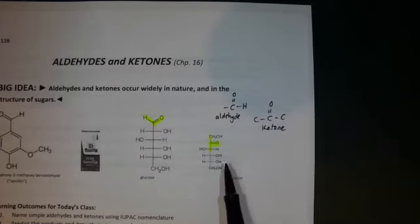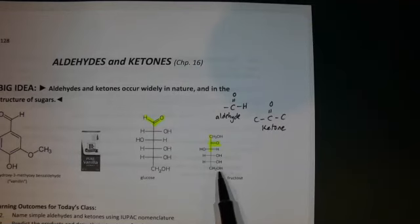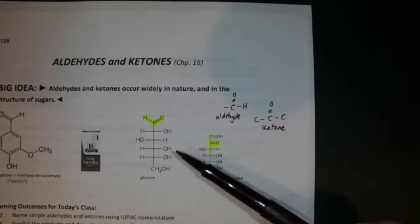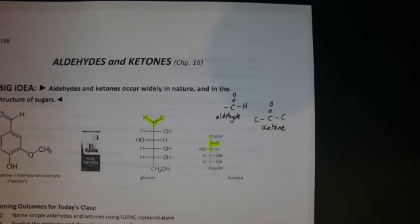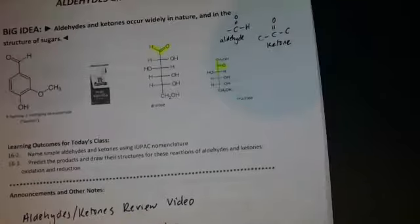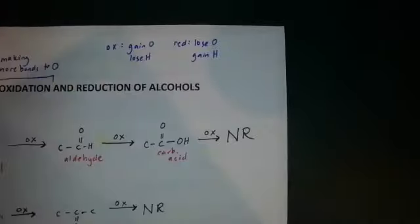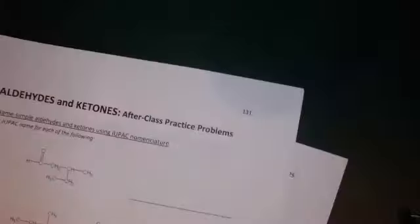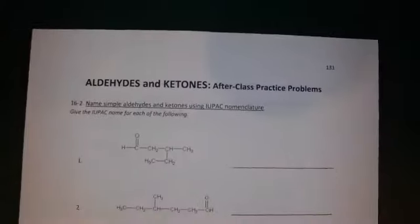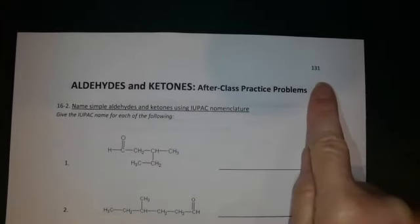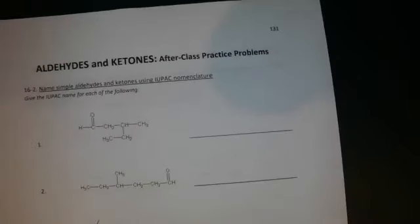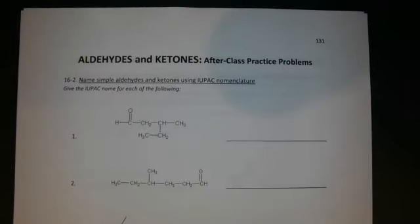Fructose has a ketone plus a bunch of alcohol groups; glucose has an aldehyde plus alcohol groups. Now let's start with naming — join me on page 131, which has practice problems for naming aldehydes and ketones. It will be very much like the alcohols we did in the previous video.